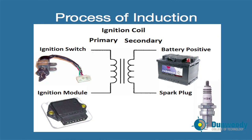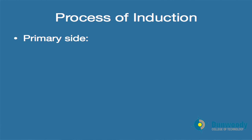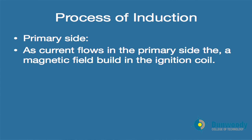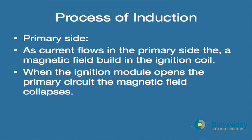The process of induction uses all the parts discussed previously — the ignition switch and the ignition module on the primary side — with battery positive voltage feeding through to the secondary side and then to the spark plug, producing 40,000-plus volts using only the original 12 volts from the vehicle's ignition system. On the primary side, current flows through the primary winding and a magnetic field builds in the ignition coil. When the ignition module opens the primary circuit, the field collapses. Essentially, the ignition module is just a simple switch that opens and closes the primary circuit.